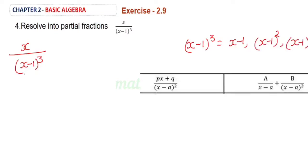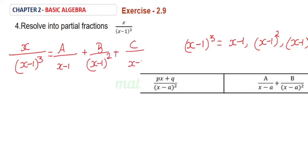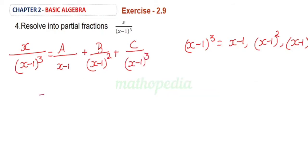So the given fraction can be split as A by (x minus 1) plus B by (x minus 1) whole square plus C by (x minus 1) whole cube. Now taking the LCM, the denominator is (x minus 1) whole cube.